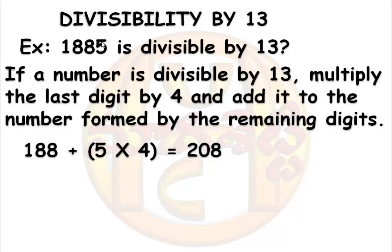The units digit is 5, that is the last digit. By excluding this, we have the remaining digits 188. So the number formed by the remaining digits is 188. Adding the product (5 × 4 = 20) to 188, we get 208.